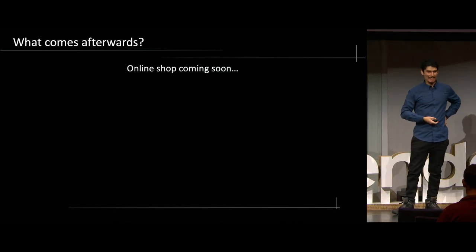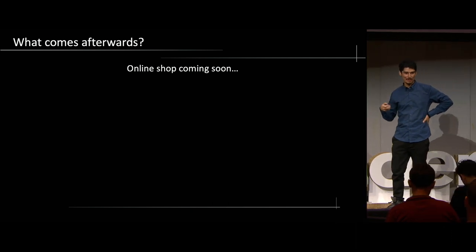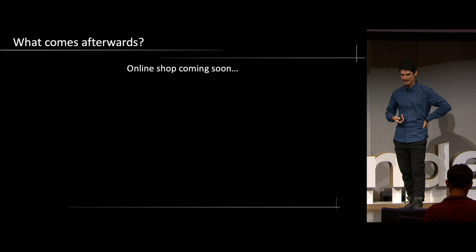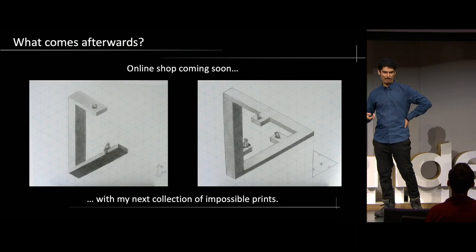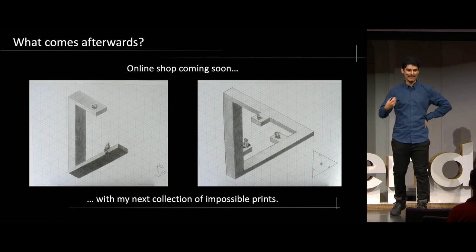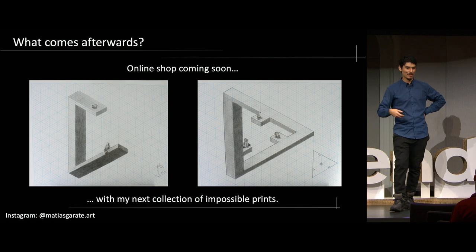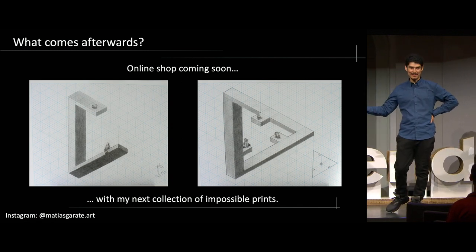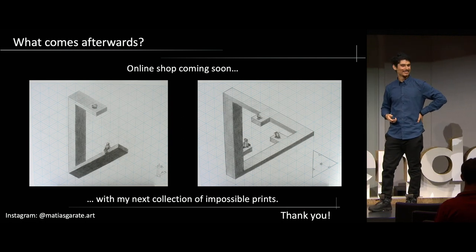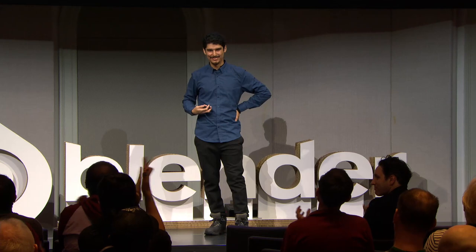The next step for me is to open an online shop for my prints — I want to sell my work online and let people enjoy it in physical form. I'm preparing a new collection of impossible geometries, currently at the early sketch stage, which will come to Blender and then be printed in high quality. You can find more information on my Instagram, or just come talk to me afterwards — I actually have some of my prints with me if you want to see them in physical or take one home. Thank you so much for listening.